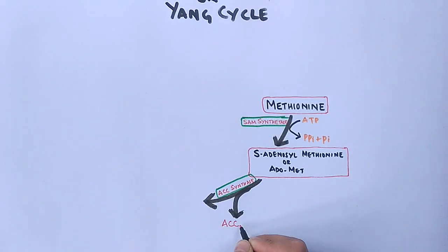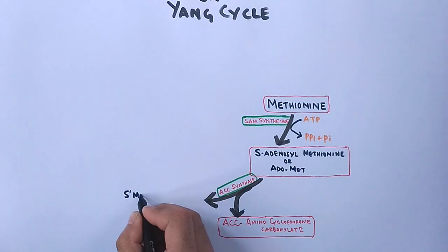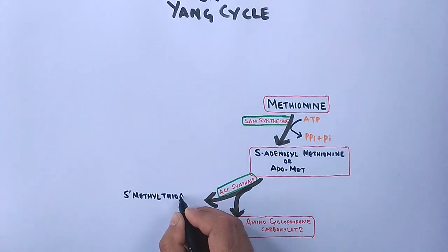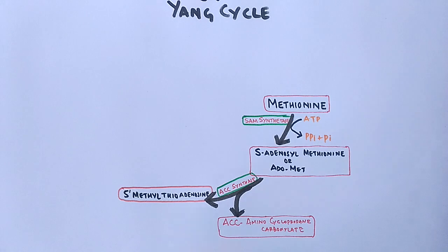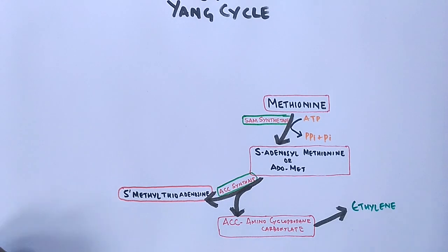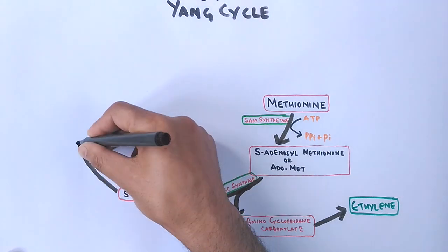The ACC synthase enzyme yields two products from this reaction. One is ACC — aminocyclopropane carboxylate — and the other is 5-methylthioadenosine. ACC gets converted into ethylene, which we have already discussed in the ethylene biosynthesis video.